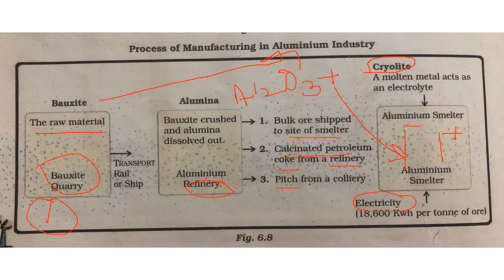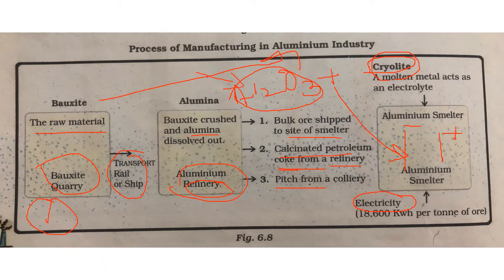Let's go back to the first square for a recap. The raw material is bauxite, which we get from a bauxite quarry. It is transported by rail or ship to an aluminium refinery where impurities are removed and we get alumina. Then alumina, along with calcinated petroleum coke and pitch, is taken to the smelter. Inside the smelter, alumina is mixed with cryolite to lower its melting point, thereby saving energy for electricity.